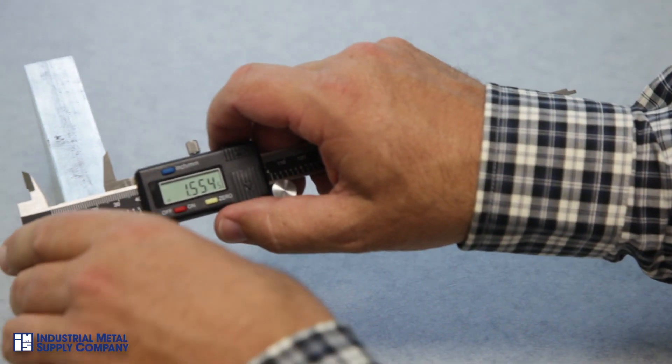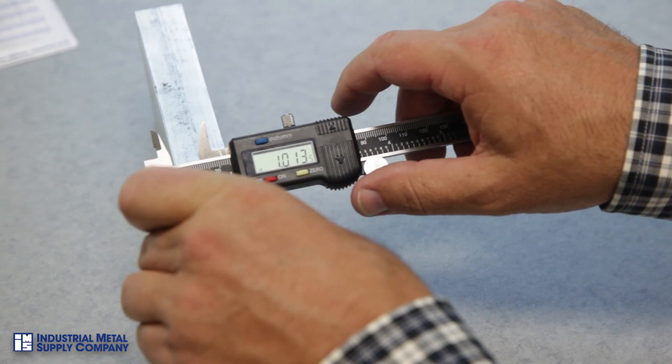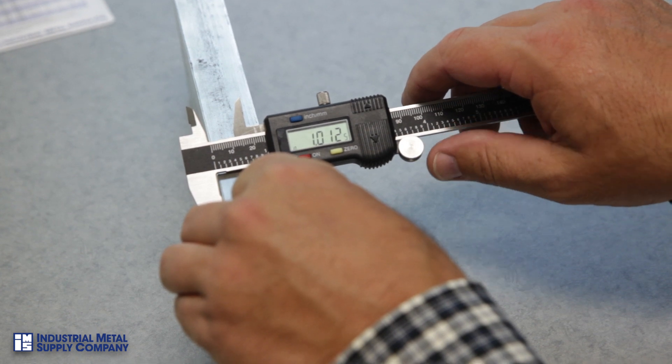So by opening the calipers to near the one inch dimension, and then firmly tightening the jaws against the sides of the metal, reading the display of one inch twelve thousandths.